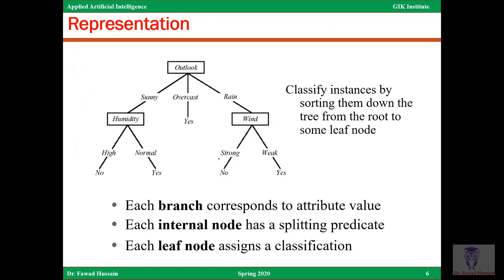The representation of a decision tree is a tree in which you are trying to predict the weather — you look at the outlook, whether it's sunny, overcast, or raining. If it's sunny, you check the humidity — normal or high — and then decide whether it's going to rain. Each leaf node assigns a classification: yes or no. All intermediate nodes are questions. Each branch corresponds to an attribute value, and each internal node has a splitting predicate. This example from the book asks whether you are going to play tennis or not.